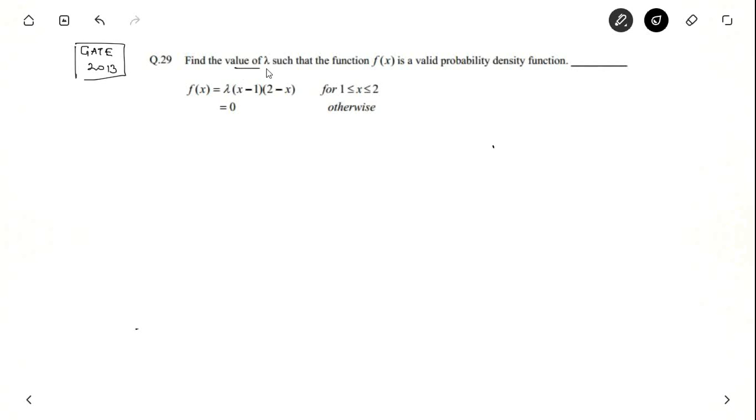So, this problem came in Gate 2013. They are asked to find the value of lambda, such that function f of x is a valid probability density function. Note the word valid here. So, integral the range, here the range is 1 to 2, f of x dx equal to 1. So, if you solve for this, you will get the value of lambda. It is as simple as that. So, integral 1 to 2, lambda, x minus 1, 2 minus x dx equal to 1.